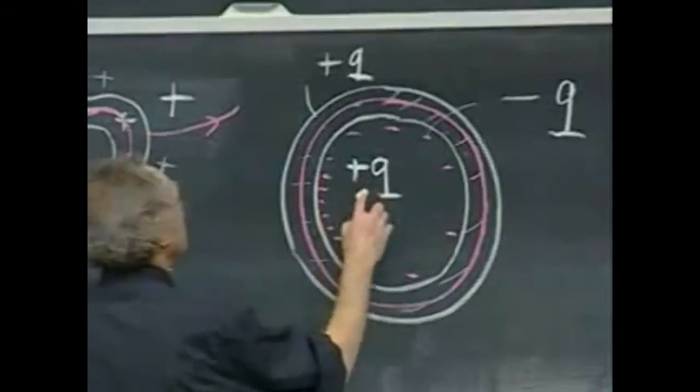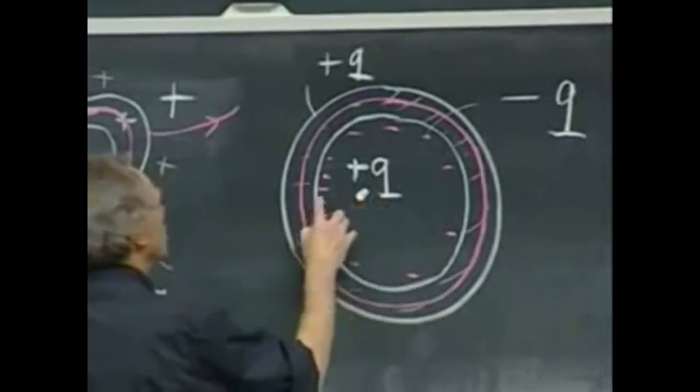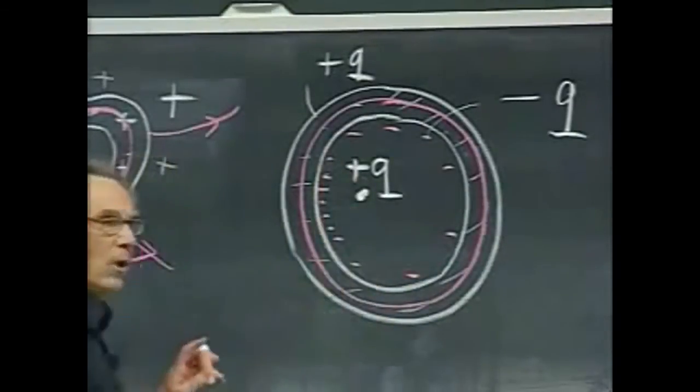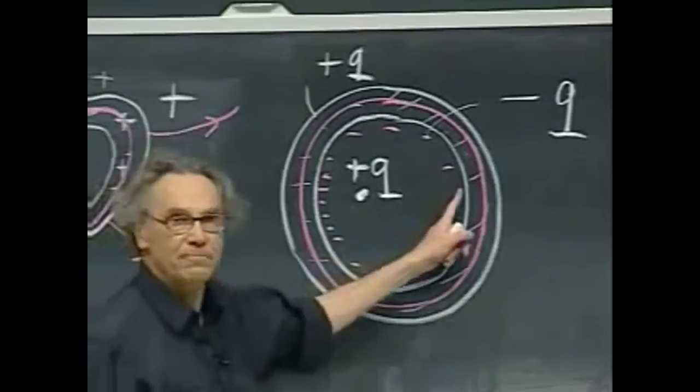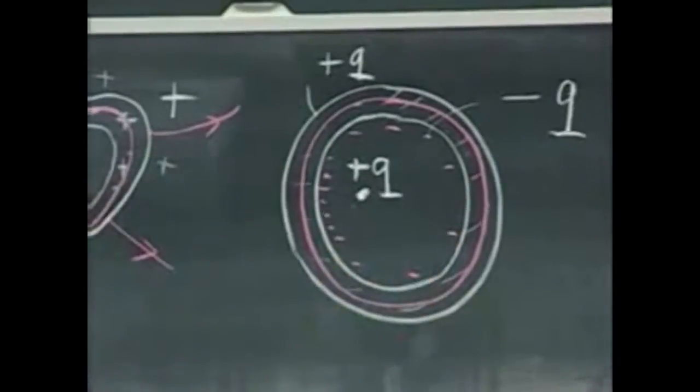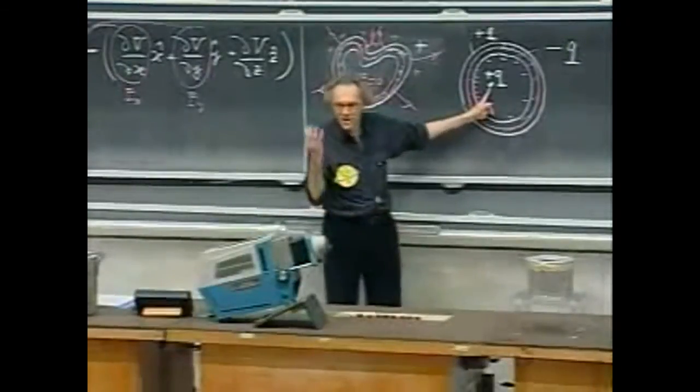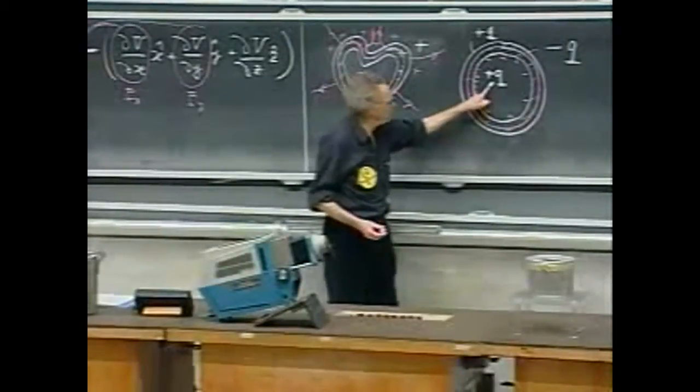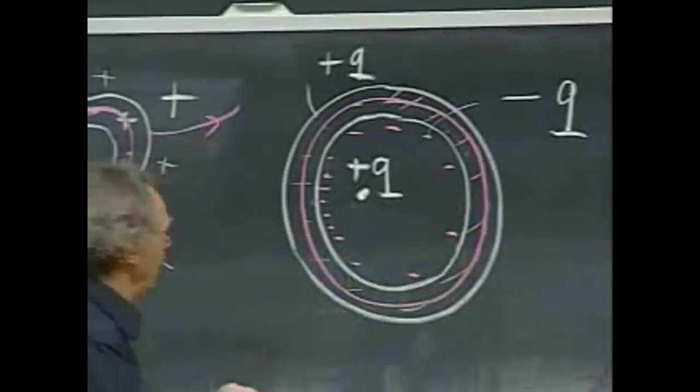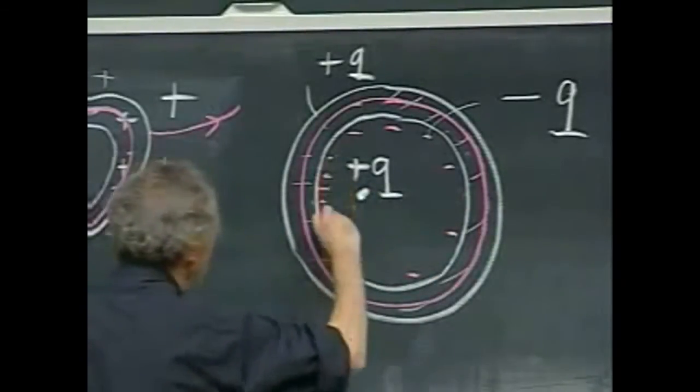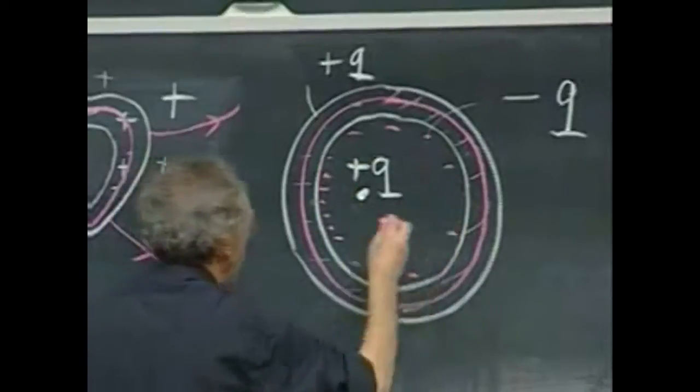I would imagine that if this charge Q is closer to this wall than to that wall, the negative charge here will be larger in density than there. It's really an induction effect. The negative charge wants to go to this plus. And since this charge is closer to this wall, it will be able to attract more electrons. So it's clear that the density of charge here should be higher than there.